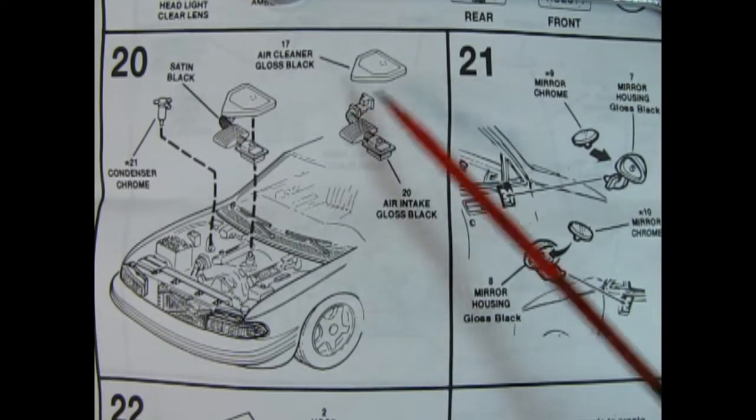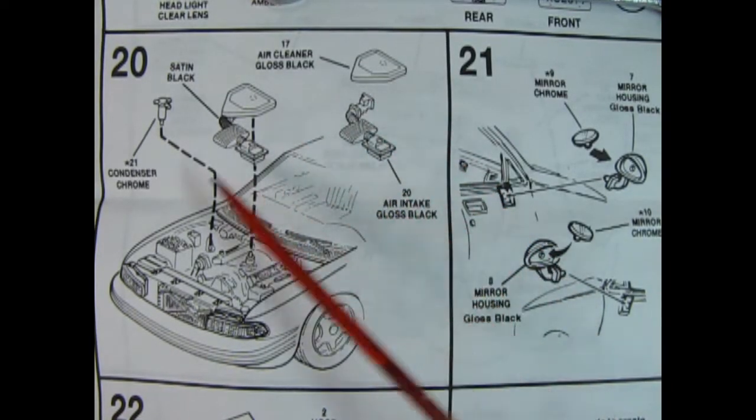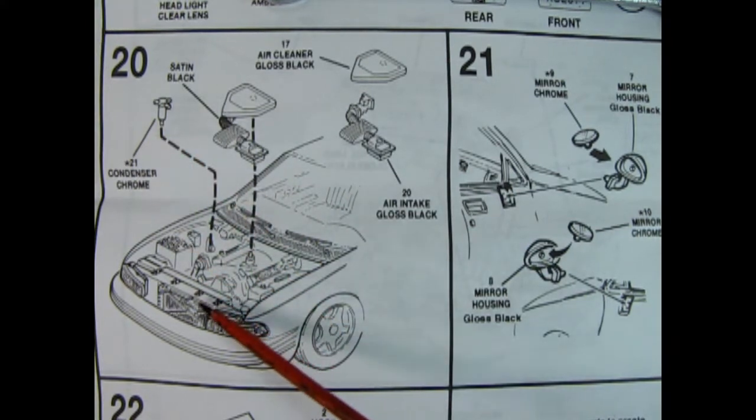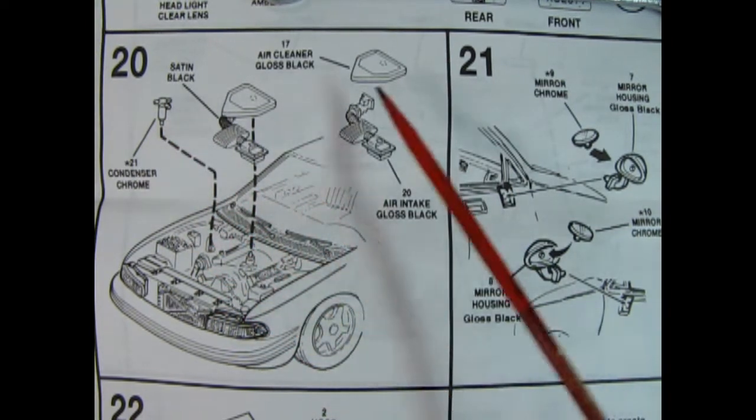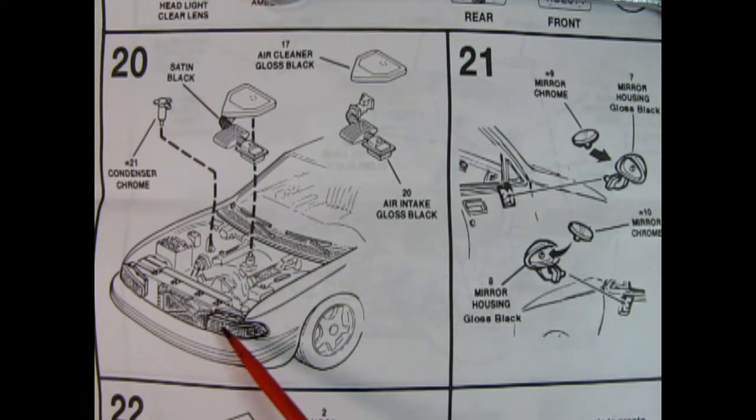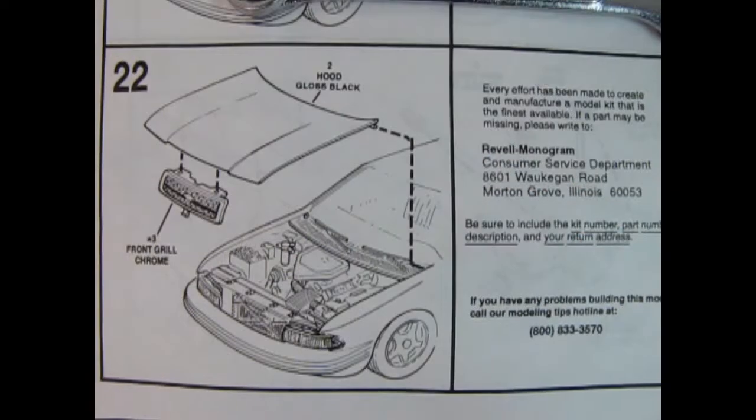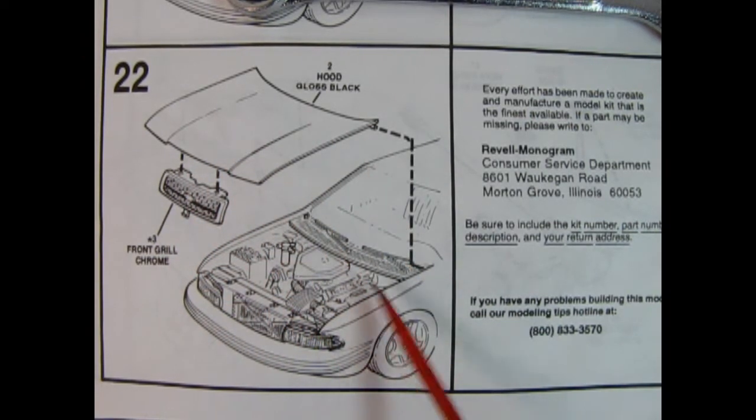Panel 20 shows the air cleaner going together. It's a two-piece unit. Then here we've got our condenser for our air conditioner. So all that will hook in under the engine bay on top of that engine block. Then we've got our chrome mirrors and the mirror housings all going in place on left and right. In panel 22 we have the front grille being glued on the underneath of the hood and then that drops in position here. So I hope you enjoyed the instructions and I will be taking a look at the decals in a little while. Thank you very much Danny for showing us those instructions.